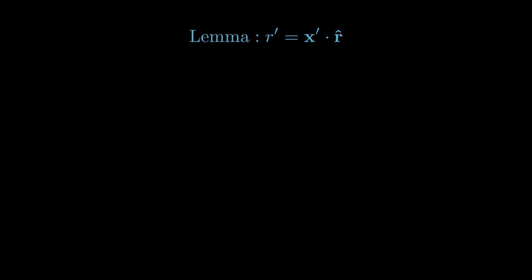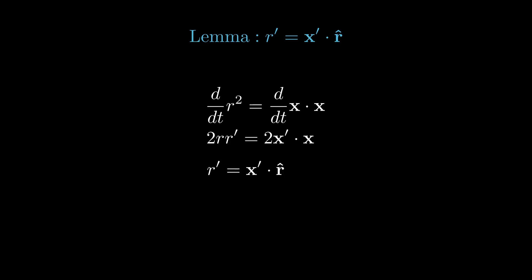We'll need a little lemma: r prime equals x prime dotted with r̂. To derive this, we start with r squared equals x dot x. Taking derivatives of both sides, we have 2r r prime equals 2x prime dotted with x. Dividing through by 2r on both sides, we're left with r prime equals x prime dotted with x over r, which is r̂.